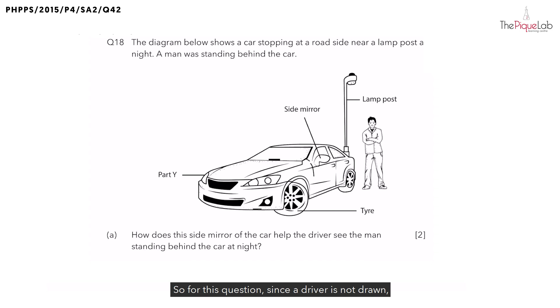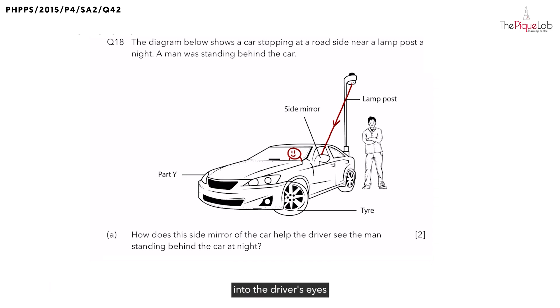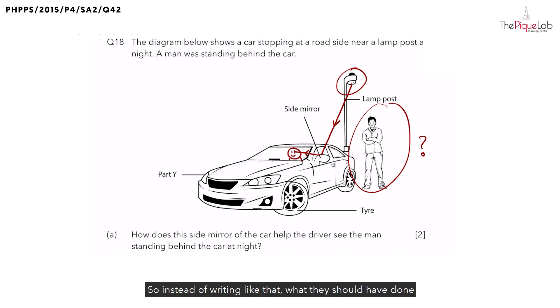So for this question, since a driver is not drawn, I will just draw a driver in the car so that it's easier for us to refer to. Now for this question, most students actually wrote light from the lamppost is reflected off the mirror into the driver's eyes. Now if students write this answer, what they're describing is actually how the driver is able to see the lamppost using the mirror. This explanation does not explain how the man behind the car could actually be seen.